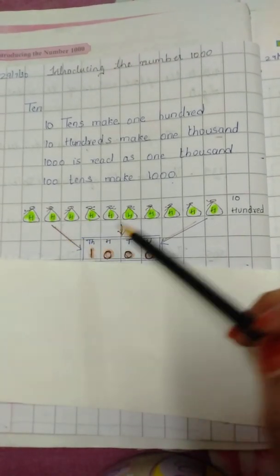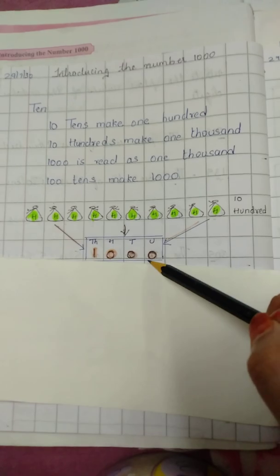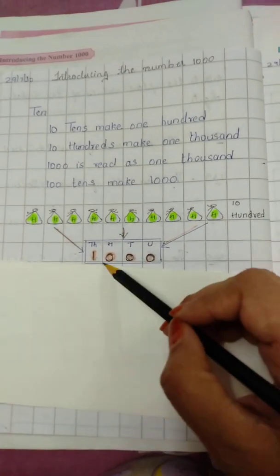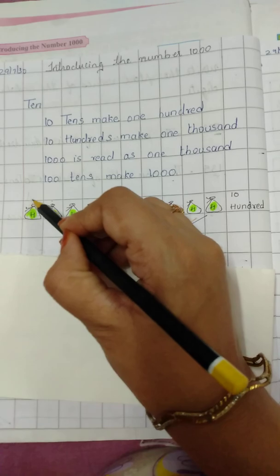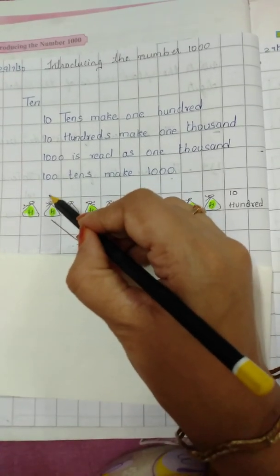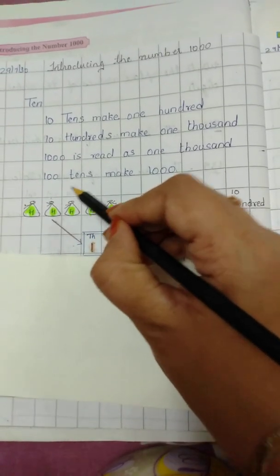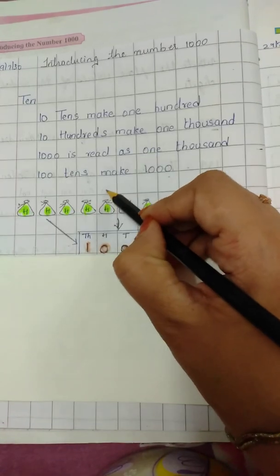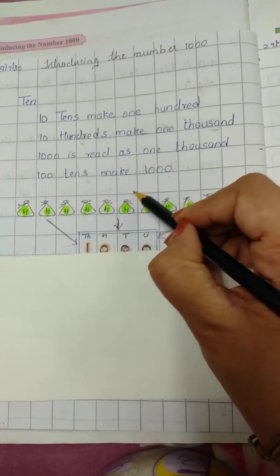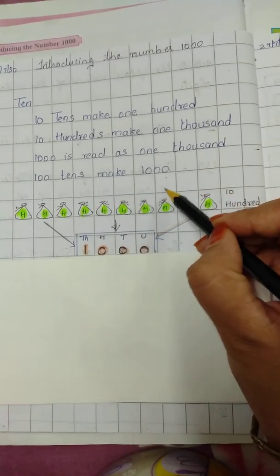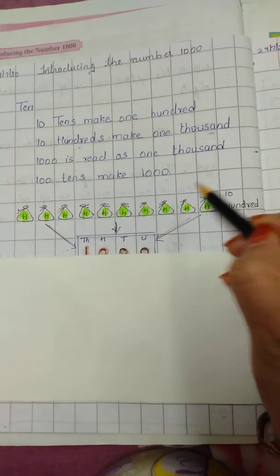Toh aise kitne 100 moti ke packets 1000 banaate hain? It is 10. Kaise count kar sakte hain? Isme 100 hai, right? Toh isme bhi 100 hai, isme bhi 100 hai, isme bhi 100 hai. 100, 100, 100, 100, 100. Okay?